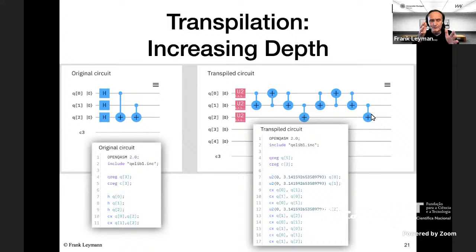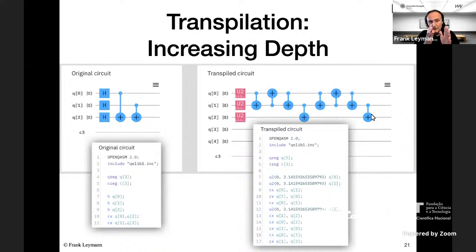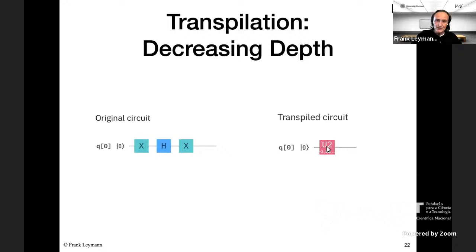This means if you look at an algorithm published in a paper, you really can't estimate the transpiled circuit that will actually be executed on a concrete machine — you cannot determine from the published algorithm alone whether it can run on a given machine. Sometimes circuits may decrease in depth after transpilation, but unfortunately this is only rarely the case. The same circuit transpiled to different environments can behave very differently: transpiling to a simulator gave a significant depth increase, while transpiling to a certain QPU kept the depth unchanged.